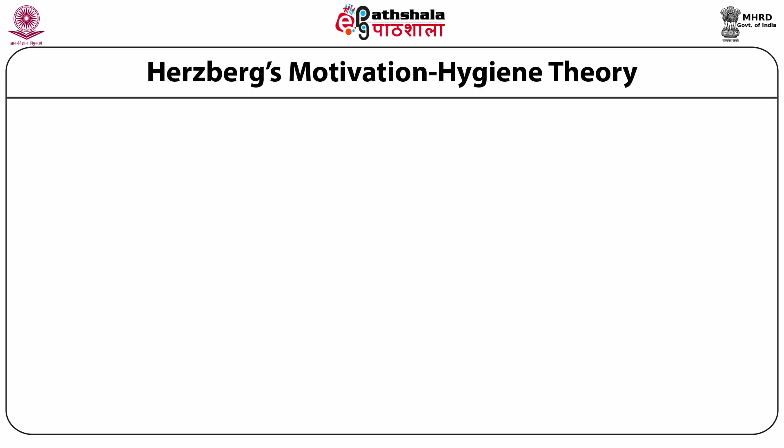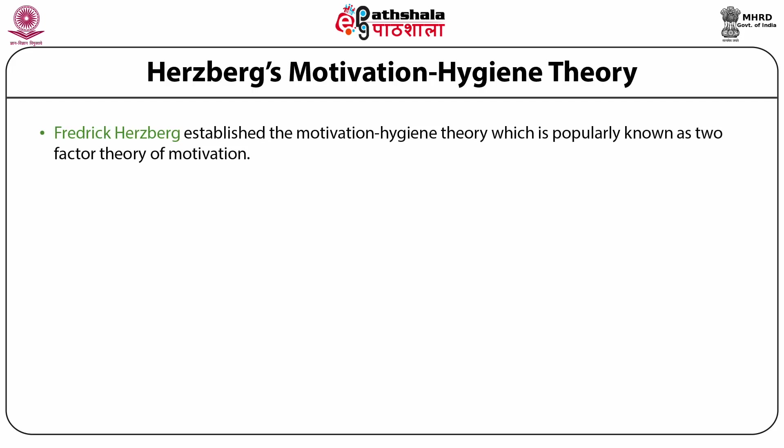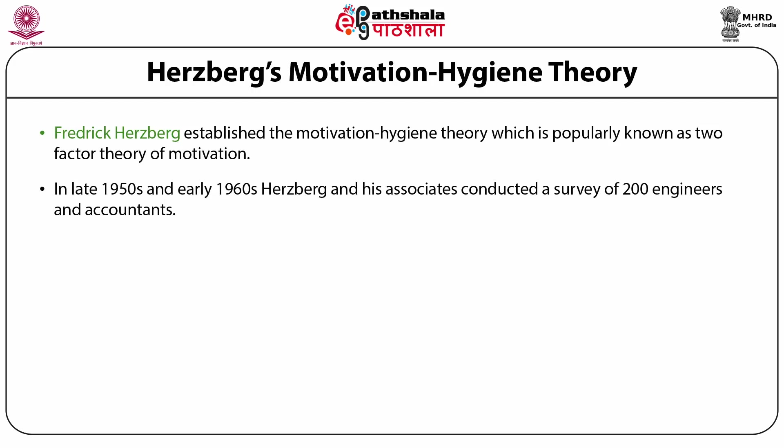The second theory is Herzberg's Motivation-Hygiene Theory, given by Frederick Herzberg in the late 1950s and early 1960s. This theory is popularly known as the Two-Factor Theory of motivation. Herzberg and his associates conducted a survey of 200 engineers and accountants.